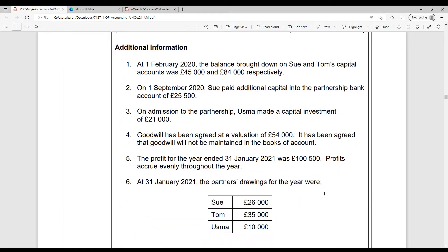We've got some additional information. So the balance on the capital account, Sue had £45,000, and Tom had £84,000. On the 1st of September, Sue has paid additional capital into the account, £25,500. Usma's brought £21,000 in also on the 1st of September when she joined. And Goodwill's been agreed a valuation of £54,000. So remember that with Goodwill, we need to credit the old partners, so the ones that were there originally, to their capital accounts in their profit-sharing ratio. And then we need to charge or debit the new partners, their capital accounts, so all three of them, partners going forwards, we need to debit them with £54,000 in the new profit-sharing ratio.